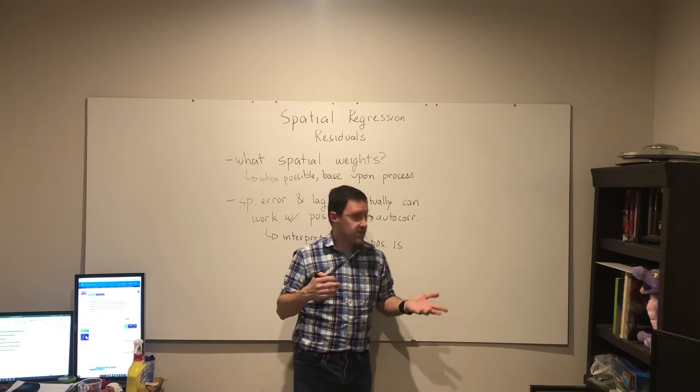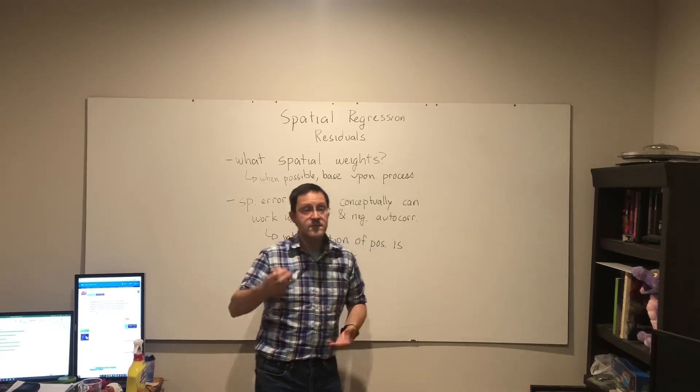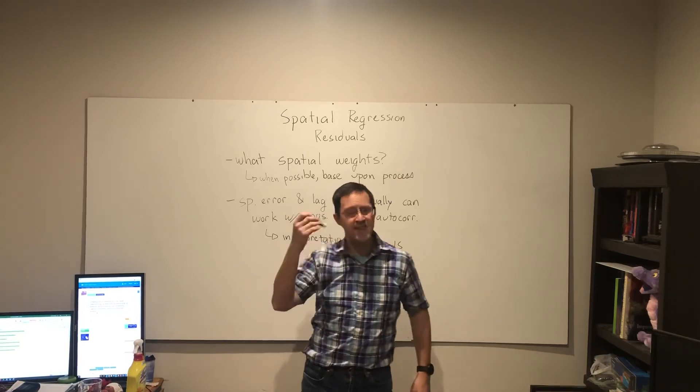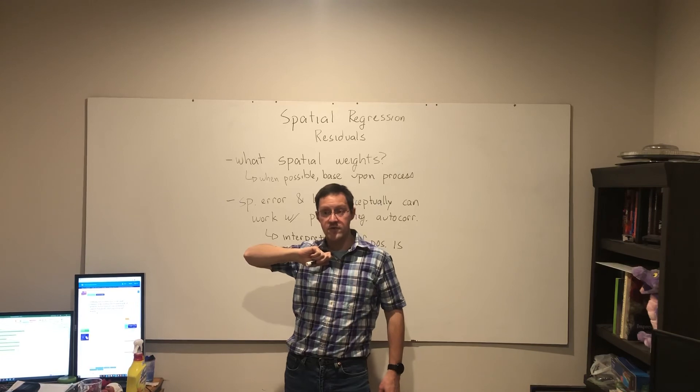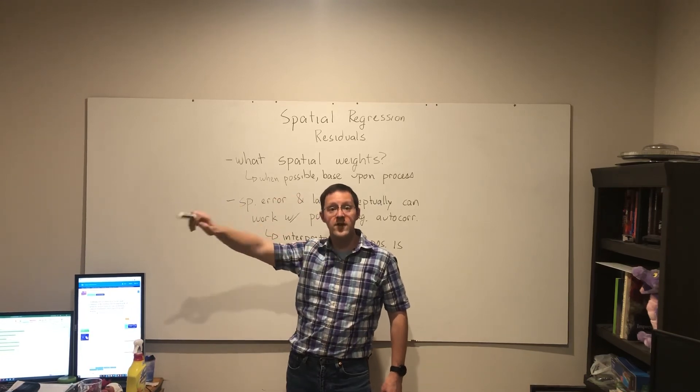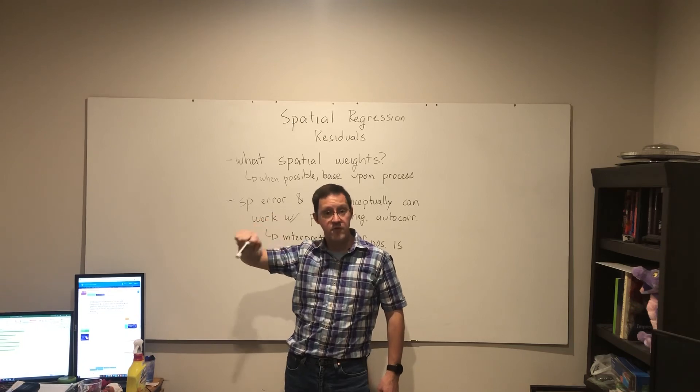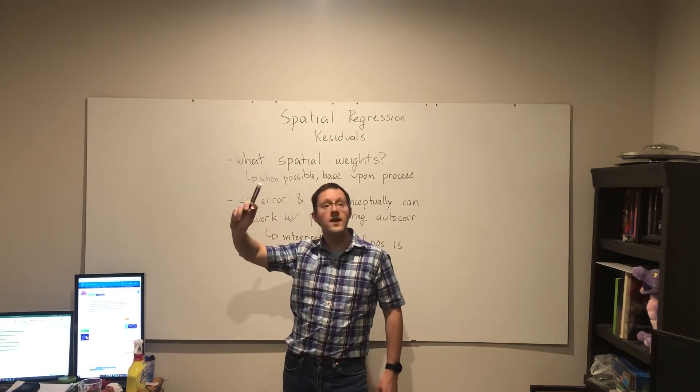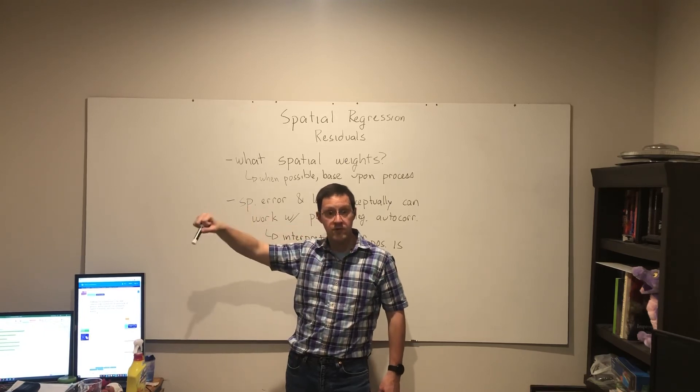So as I said here, the interpretation is easier with positive, but that doesn't mean negative is impossible. And if you do find negative autocorrelation among the residuals, it's worth proceeding to the next stage, whether that is spatial error or spatial lag regression, and choosing and interpreting the results from there.